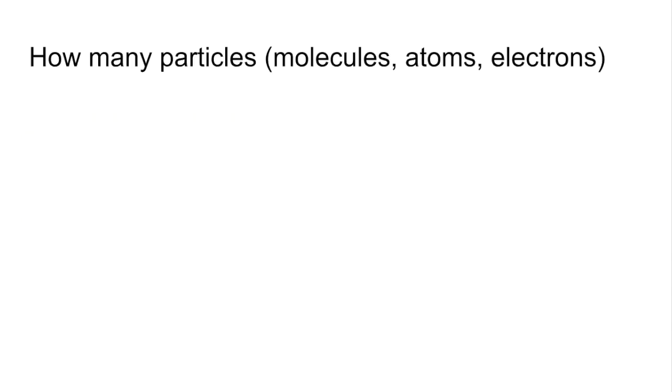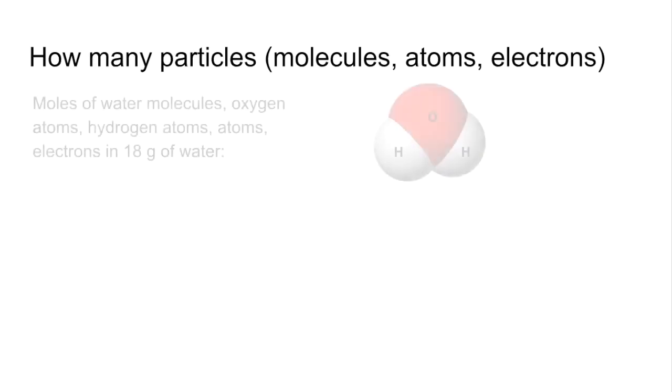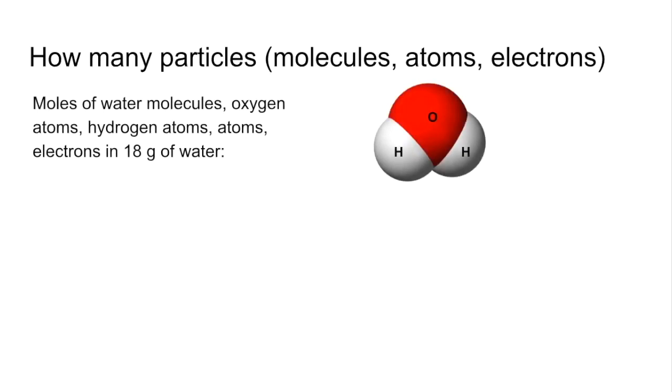So we'll move on to how to calculate how many particles we've got and we're going to be looking at molecules, atoms and electrons in water. So in 18 grams of water we're going to ultimately calculate how many of these things we've got. First thing we need to do is work out how many moles we've got.